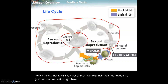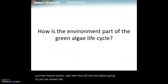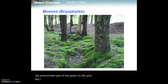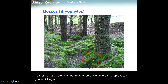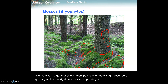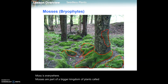You can answer the notes question about how environment is part of the green algae life cycle - pause if you need to. Now let's talk about mosses. Mosses are not water plants but require some water in order to reproduce. If you're picking out moss in this picture, there's tons of it - some here, some over there, even some growing on a tree.